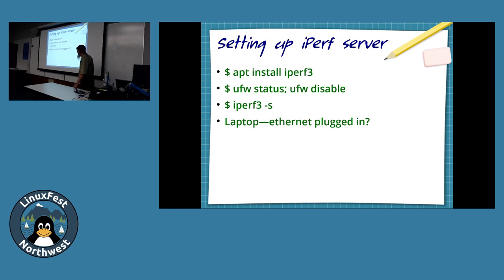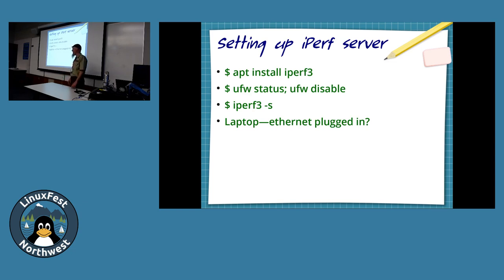iPerf3 is available in all the repos. On Ubuntu, iPerf3 needs the firewall disabled or the ports opened. You can briefly disable your firewall, run 'iperf3 -s' to become a server, and make sure your Ethernet laptop is plugged into the wall or your switch — it's really embarrassing when you fire it up and it's not plugged into anything.